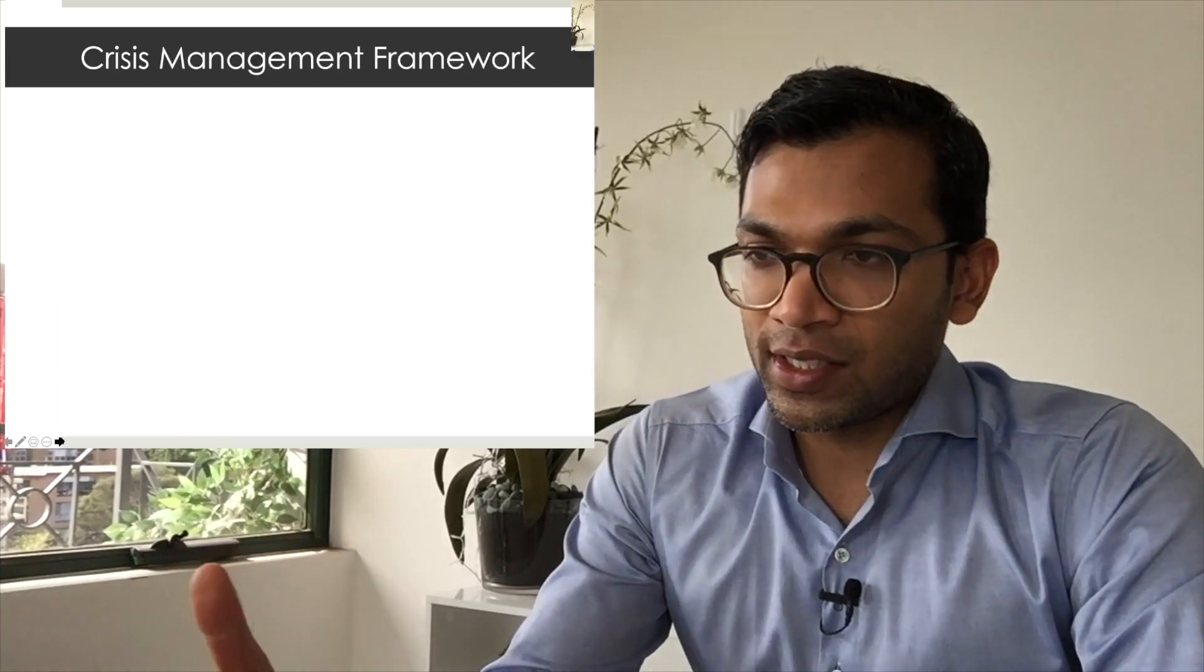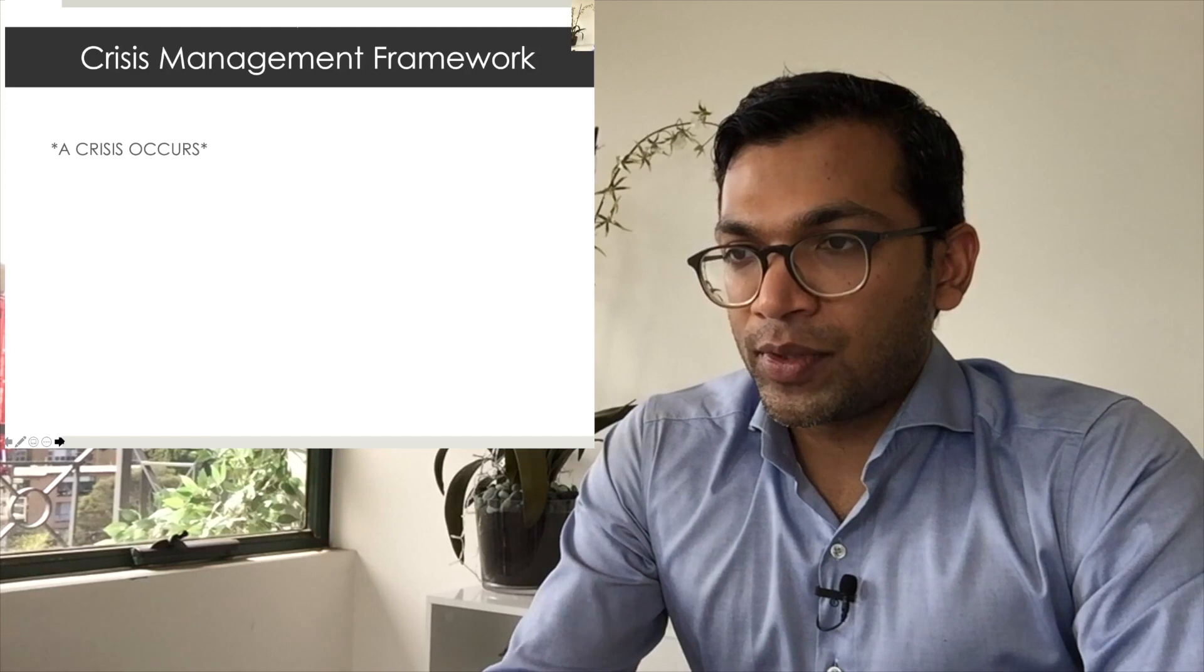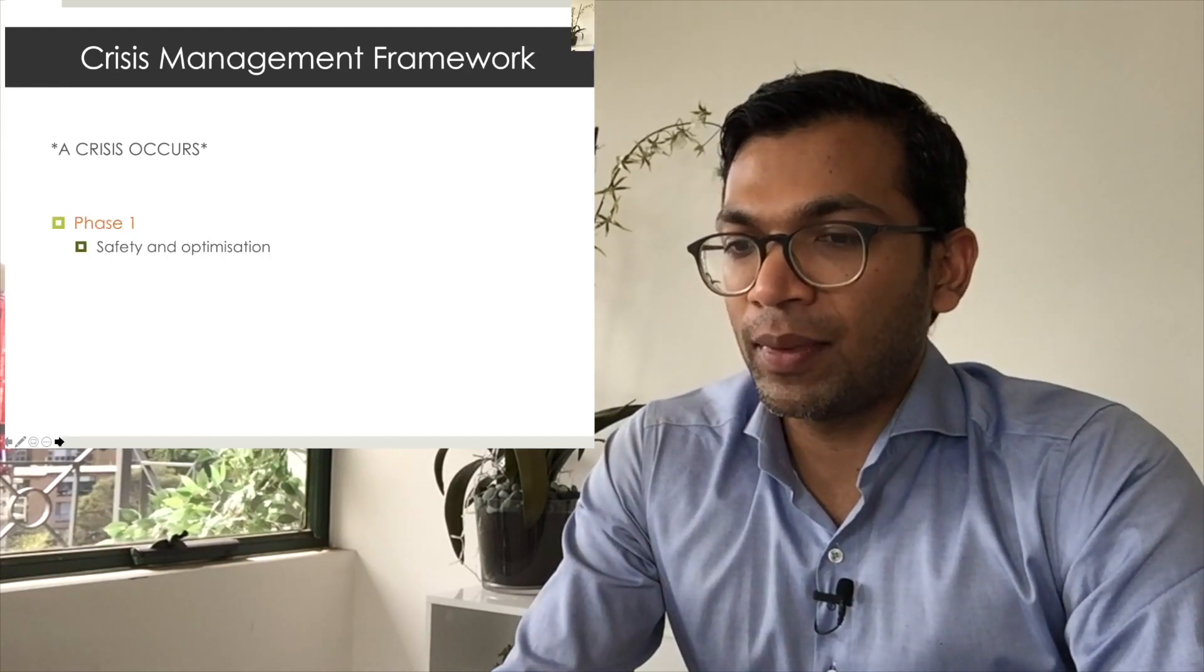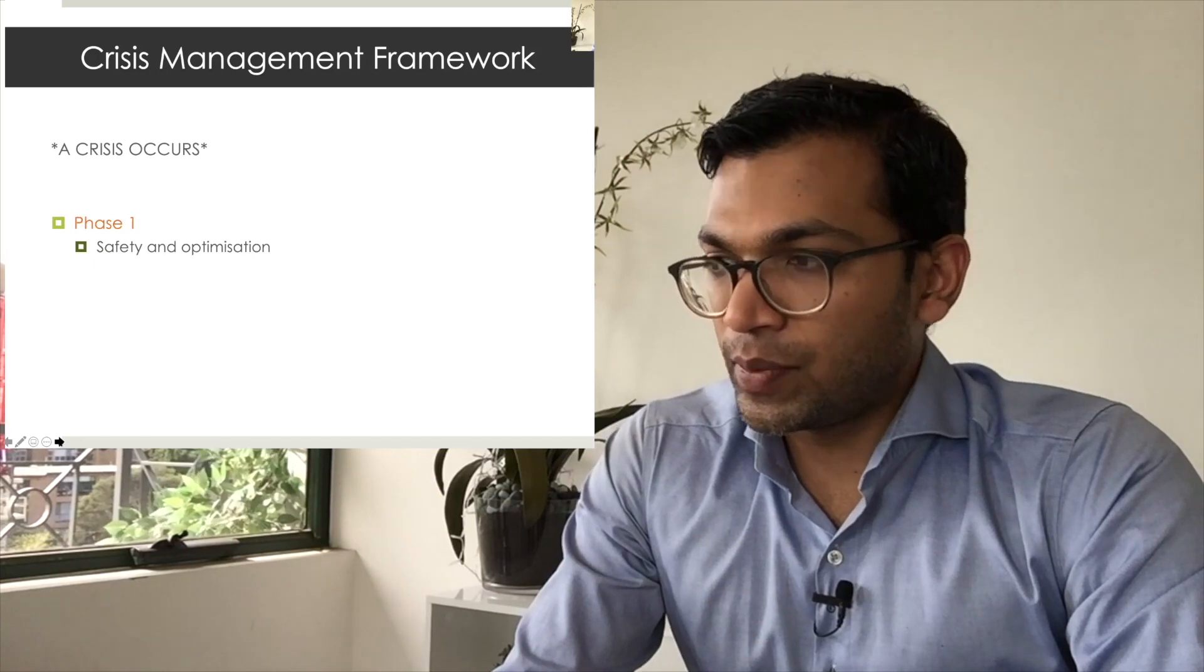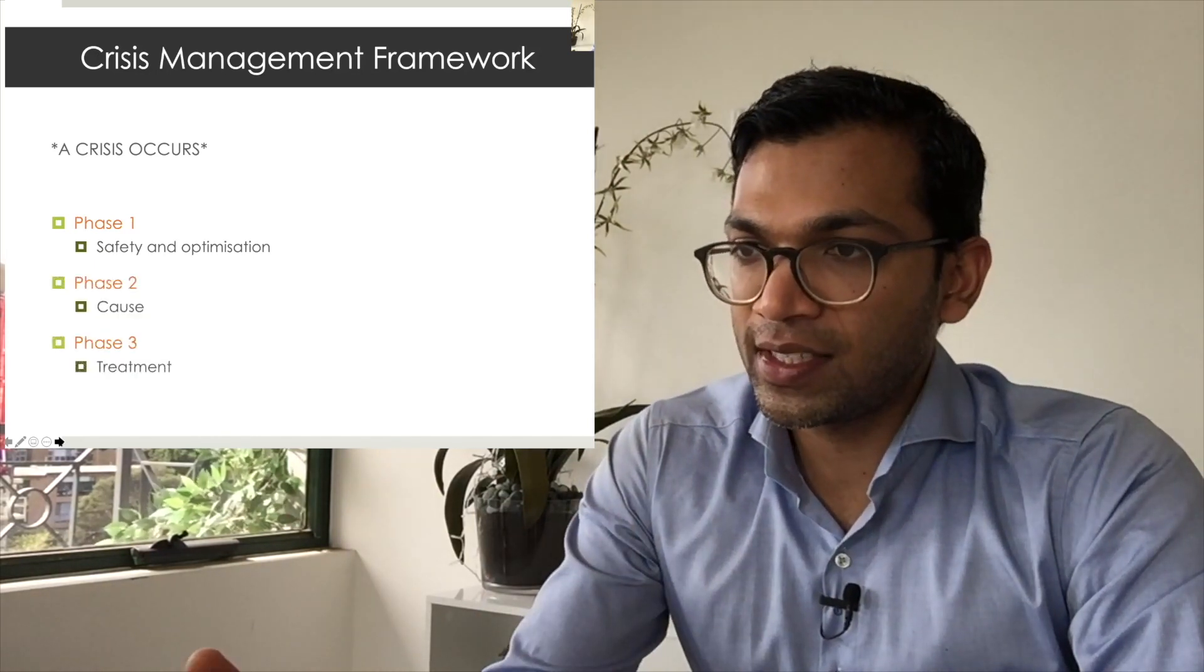Crisis management framework: a crisis occurs or some kind of problem occurs. Phase one is really just safety and optimization to get you into the realm of talking safely about something. Phase two is about the cause, and phase three is treatment. Often a lot of these will happen simultaneously, but it doesn't mean that you can't have a structured approach to this as well.